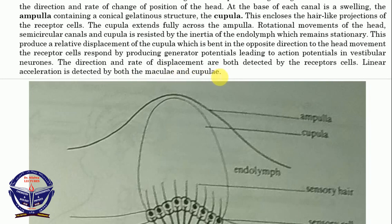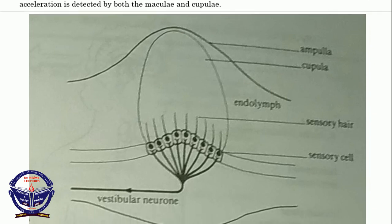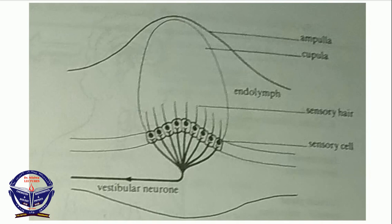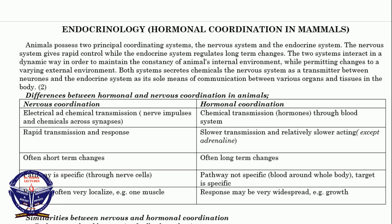Linear acceleration of the head is detected by both the macula and the cupula. The vestibular neuron carries signals to the vestibular cochlear nerve. The sensory hair cells within the cupula, endolymph, and ampulla respond when the structure moves. This marks the end of nerve transmission, and in the next session we start discussing endocrinology or hormonal coordination in mammals, and later we'll move into coordination in plants. Thank you everybody — don't forget to subscribe to the channel and to like and share this video.